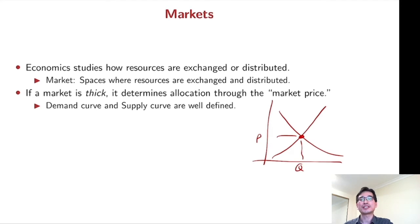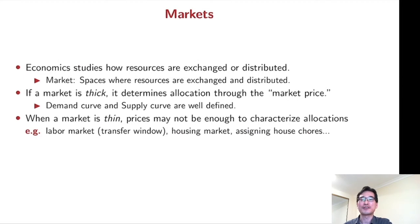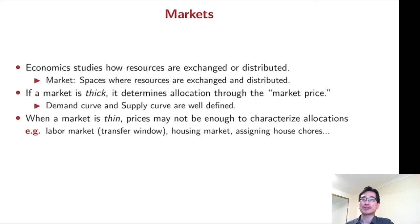But that's a very ideal situation. In real life, the market is thin — there are only few suppliers and few demanders. When a market is thin, prices may not be enough to characterize allocations. For instance, in the labor market there are short transfer windows for football players, and in the housing market every house is different and each household has a different preference over houses.